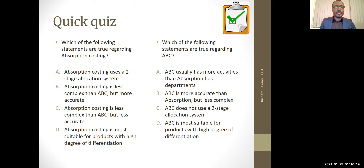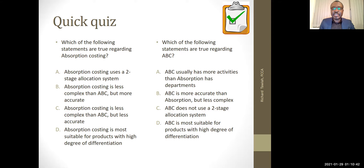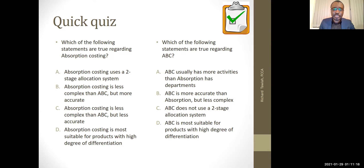Let's take a quick quiz. Which statements are true regarding absorption costing? Absorption costing uses a two-stage allocation process — true. Absorption costing is less complex than ABC but more accurate — no, it is less accurate than ABC. Absorption costing is less complex than ABC but less accurate — yes, that is true. Absorption costing is most suitable for products with a high degree of differentiation — no, that's for ABC. Regarding ABC: ABC usually has more activities than absorption costing — yes. ABC is more accurate than absorption but less complex — no, ABC is more complex. ABC does not use a two-stage approach — no, ABC also uses a two-stage approach. ABC is more suitable for products with high degree of differentiation — correct.